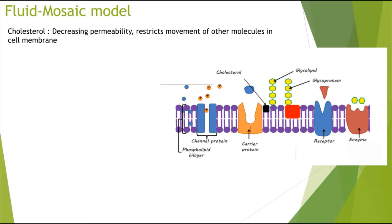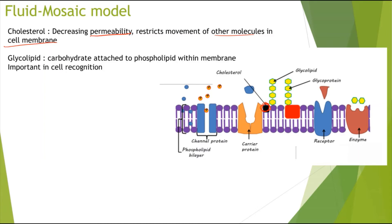Carrying on, we have cholesterol. This decreases the permeability of the membrane, restricting the movement of other molecules. It makes the cell membrane more stable — it doesn't move around as much as it would without cholesterol. Then we have glycolipids — essentially a carbohydrate attached to a phospholipid within the membrane. 'Glyco' from the carbohydrate and 'lipid' from the phospholipid forms a glycolipid.